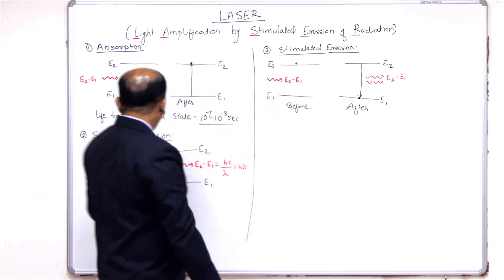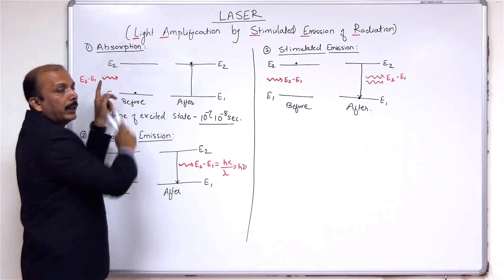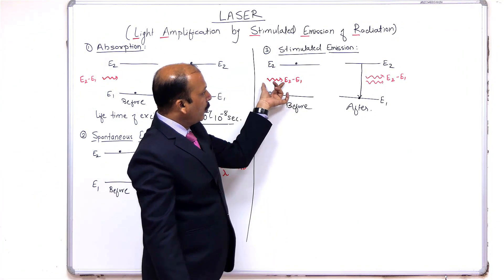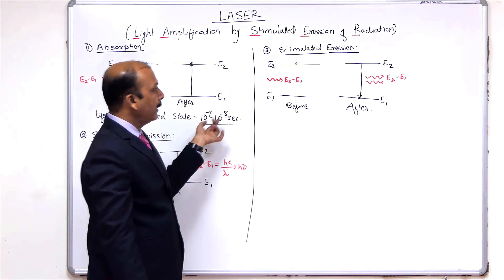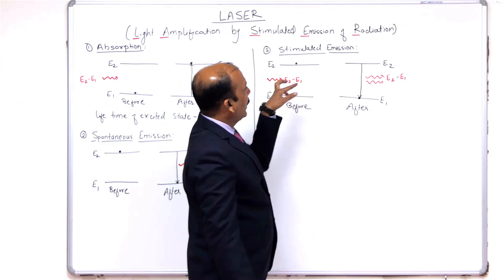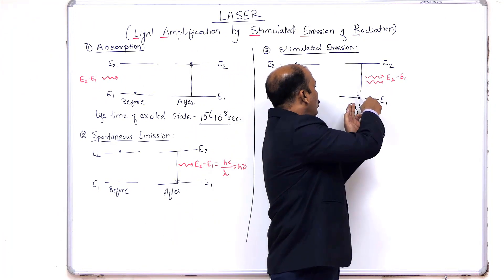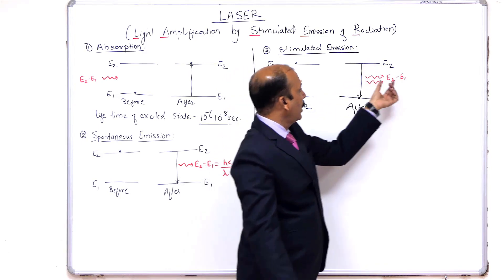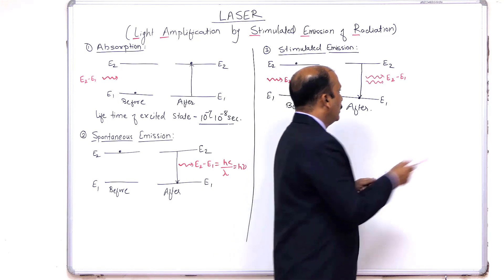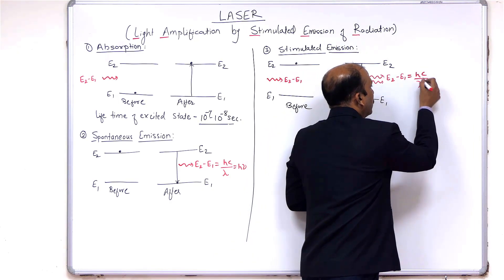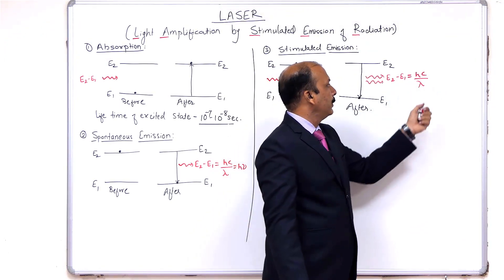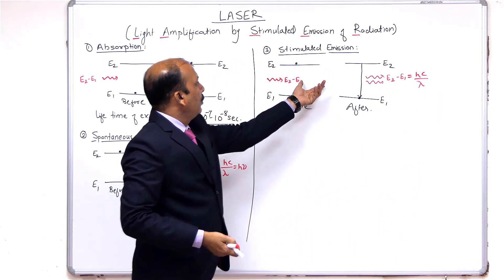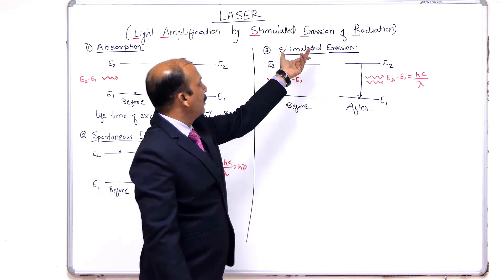When the electron came to the excited state, it already had one photon from the absorption process. One more photon is incident before 10 to the power minus 7 to minus 8 seconds, and this is also absorbed by the electron, giving it an extra photon. So while transitioning from E2 to E1, it emits two photons which are in the same phase — giving a coherent source. Both photons have energy E2 minus E1, and the wavelength can be calculated using E = hc/λ. This is called forced, induced, or stimulated emission.